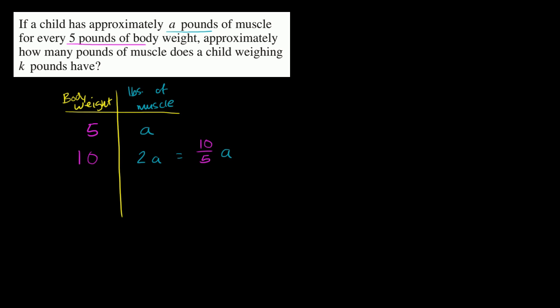And we could keep going. If you have 15 pounds of body weight, that's going to be 3a pounds of muscle, which is the same thing as 15 divided by five, times a.